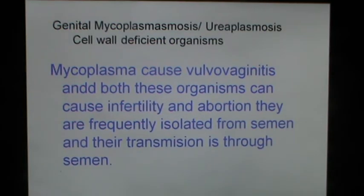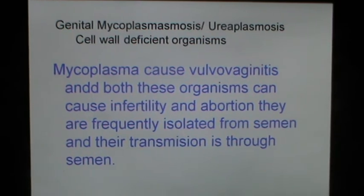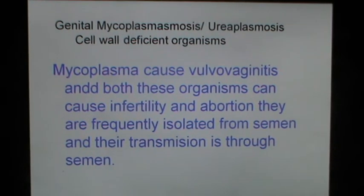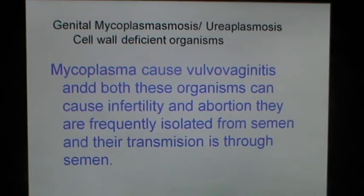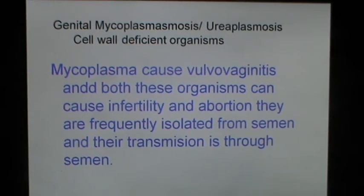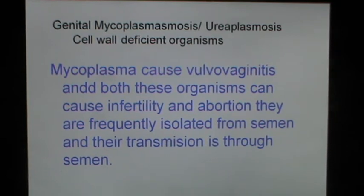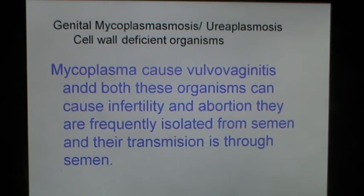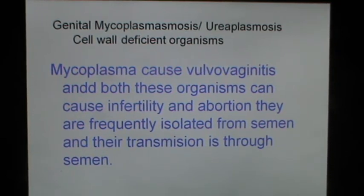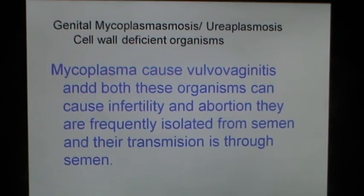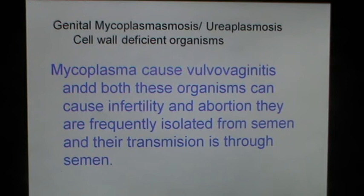Genital mycoplasmosis or ureaplasma infection can cause infertility in dairy cattle. These two organisms are cell wall deficient organisms. Mycoplasma causes vulvovaginitis, and both organisms can cause infertility and abortion. They are frequently isolated from semen, and transmission is through semen.